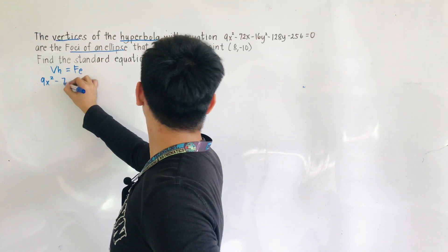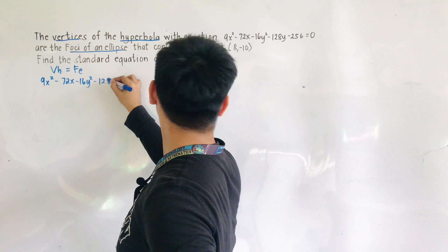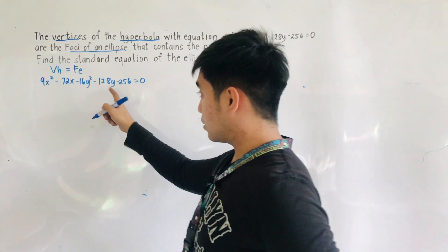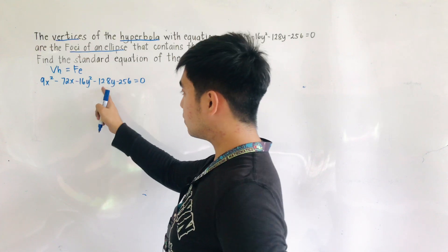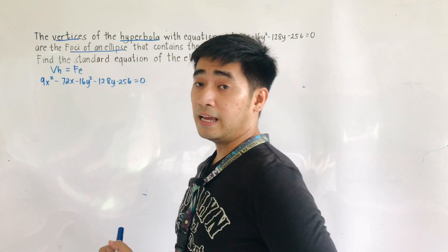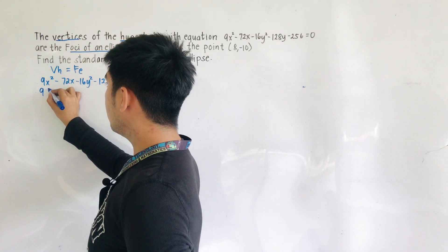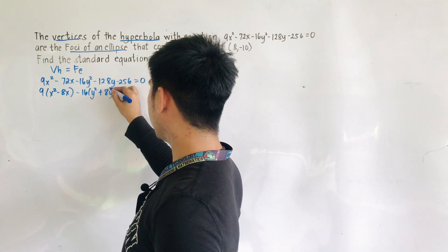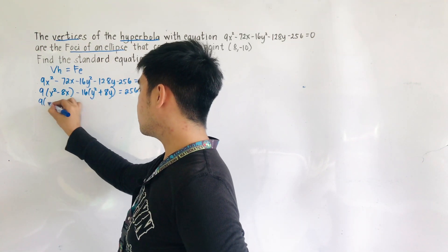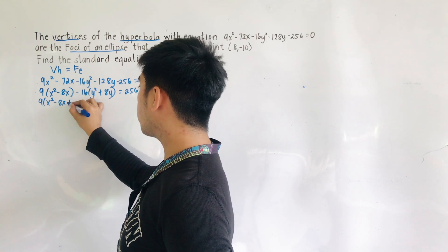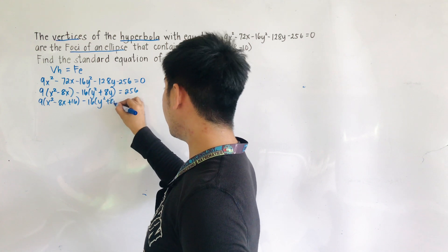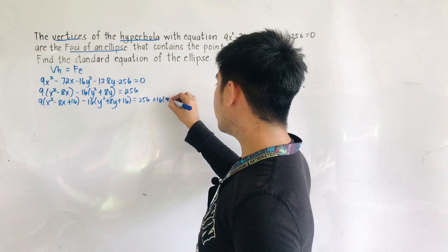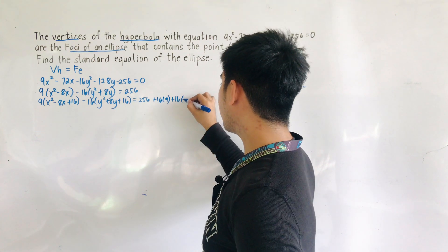We have 9x² minus 72x minus 16y² minus 128y minus 256 equals 0. We now get the center and the vertices of this hyperbola, because the center of this hyperbola is the same as the center of the ellipse. So we now have 9 times (x² minus 8x) minus 16 times (y² plus 8y) equals 256. Completing the square, we get 9 times (x² minus 8x plus 16) minus 16 times (y² plus 8y plus 16) equals 256 plus 16 times 9 plus 16 times negative 16.